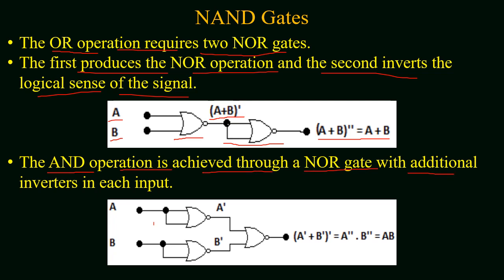Similarly, the AND operation can also be achieved using NOR gates, with additional inverters on each input. For the operation A · B, both inputs are first inverted using NOR gates, then applied to a NOR gate, giving (A' + B')'. By De Morgan's law, this simplifies to A · B, which is the AND operation. Note that the inverter operation itself is also implemented using a NOR gate.